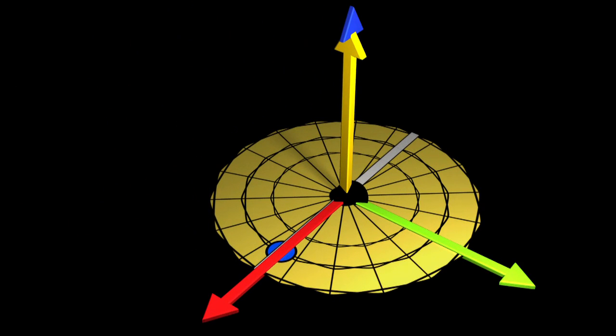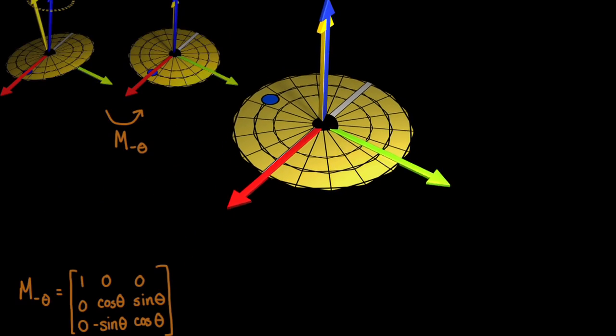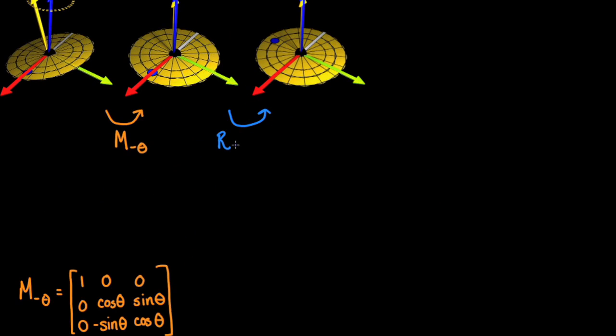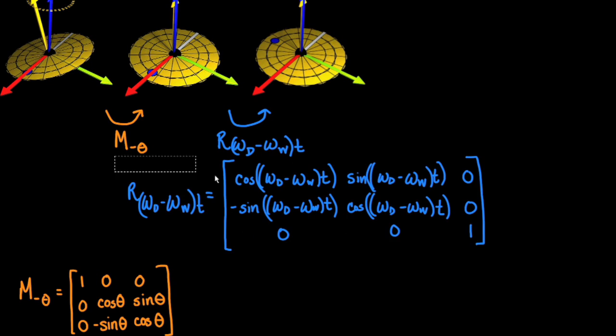Now, I rotate the marked point clockwise about the z-axis by the angle omega d minus omega w, the quantity times t. This matrix describes the angle difference traveled by the marked point relative to the position of the tilt axis.